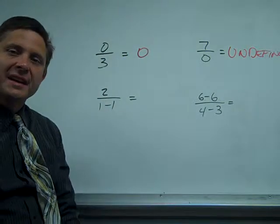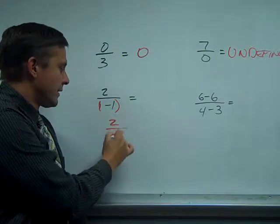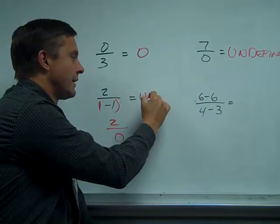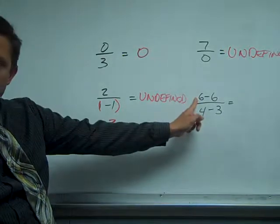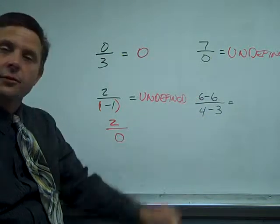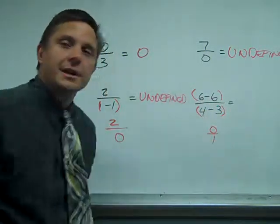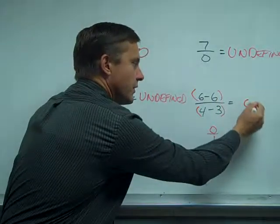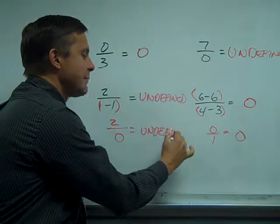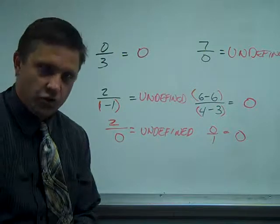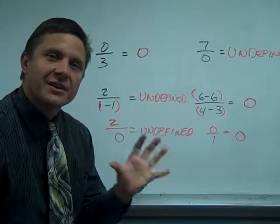Two over one minus one — we know that there are implied parentheses when you have a fraction. One minus one is zero. Anything divided by zero has to be undefined. Here we have six minus six over four minus three. Parentheses are implied in the numerator and the denominator, so we get zero over one. Can we do this? The answer is sure — and that is zero. Again, dividing by zero is a horror picture; you can't do it. If you can't remember the word undefined, just write 'no' — it just can't happen.